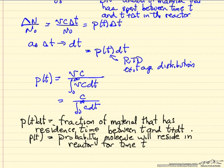So this P(t)dt is the fraction of material that has spent the residence time between t and t plus dt in the reactor. So P(t) is the probability the molecules reside in the reactor for time t, which means that molecule will have that much time to react. Of course the longer molecules spend in the reactor, the more likely they are to react.